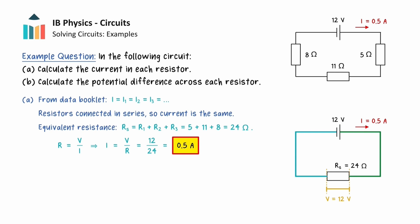With the current determined, we can rearrange the definition of resistance to calculate the potential difference across each resistor. The potential difference across the 5 ohm resistor is equal to the current 0.5 amps multiplied by its resistance, giving a value of 2.5 volts.